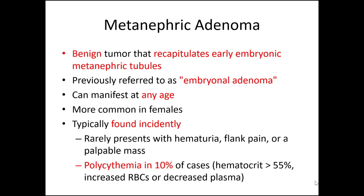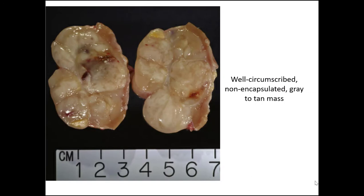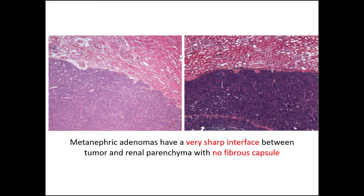They're usually found incidentally, but they can present with hematuria. Polycythemia is seen in around 10% of cases. Grossly, you'll notice it has a pretty sharp border between tumor and kidney. Unlike the clear cell renal cell carcinoma, it lacks abundant hemorrhage and necrosis, and it doesn't really have that yellowish appearance. These tumors have a characteristic very well-demarcated or sharp border between the tumor — which has a blue appearance — and the normal kidney. Typically they lack a fibrous capsule.